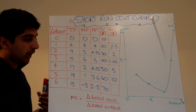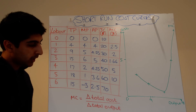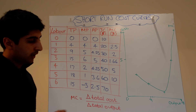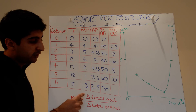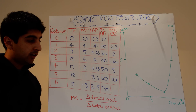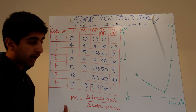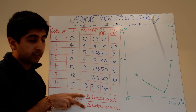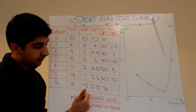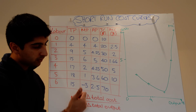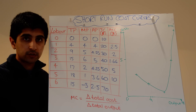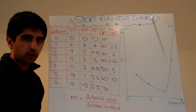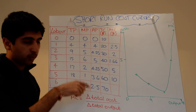To understand how we calculate marginal cost, we're looking at changes in things. It's the change in total cost divided by the change in total output — the changes of these two things. If we got rid of the 'change', we'd just have the average cost. We're looking at the extra cost, and that's when we use changes.